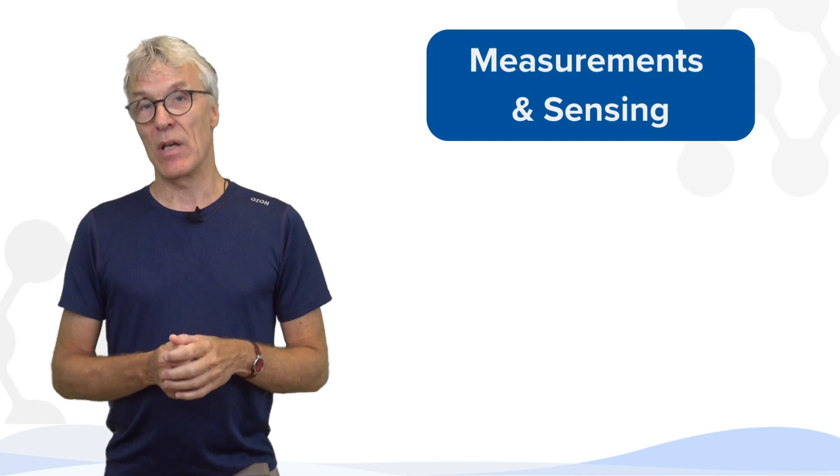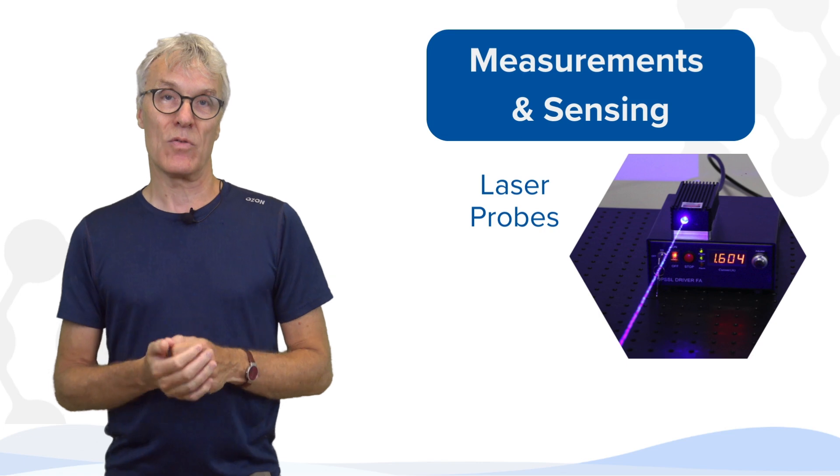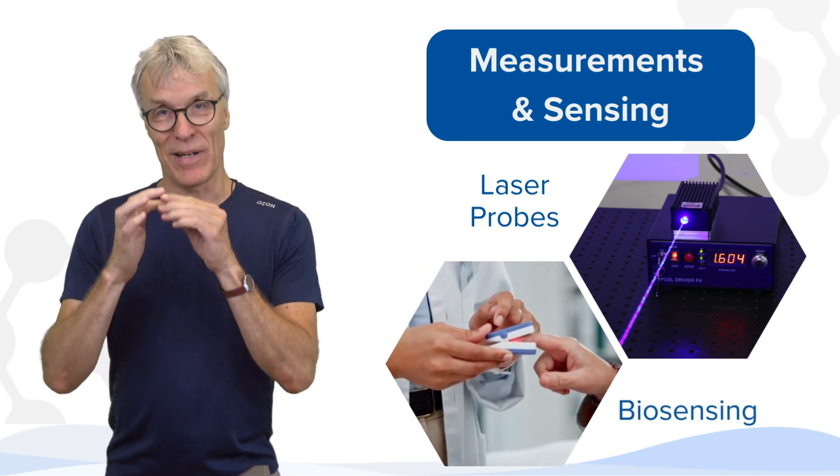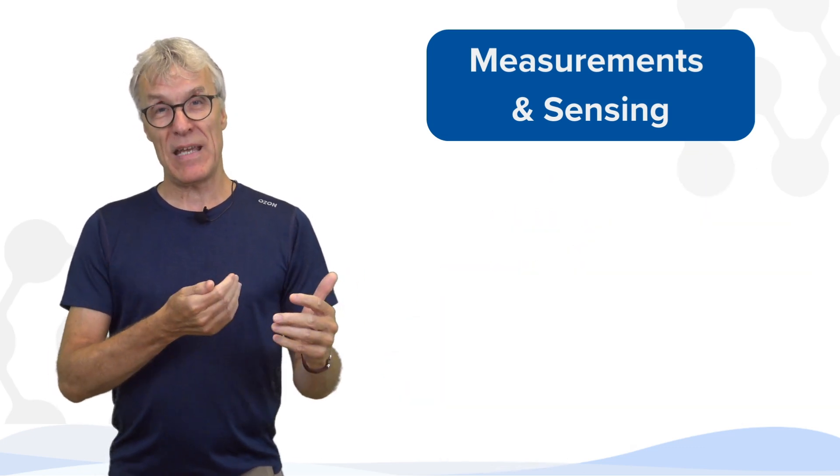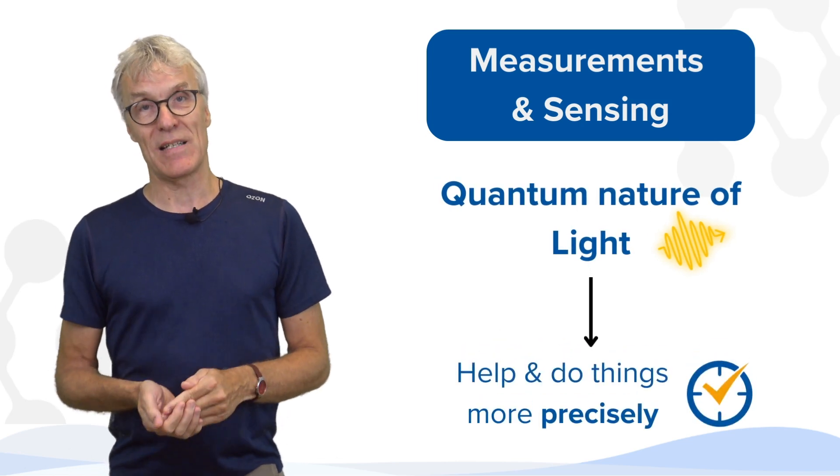We are using lasers to probe things in the industry. We use light also to sense, for example, the bloodstreams. If you go to the hospital, they put a little clip with a light source in it. So there are many applications of light where the quantum nature of light may actually help and do things more precisely.